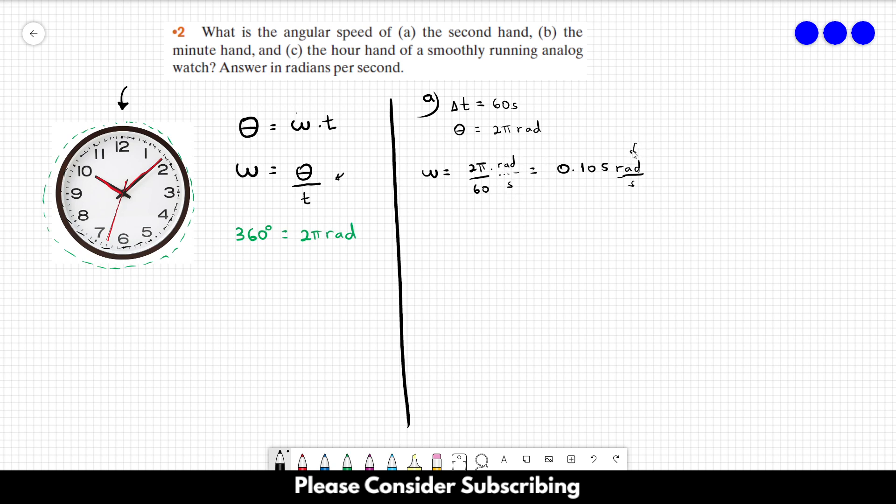For letter b, the minute hand, it's the same thing. However, a full circle is one hour, so it is 60 seconds times 60 minutes. We have 60 minutes in one hour, and in each minute we have 60 seconds. So this is 3600 seconds in one hour.